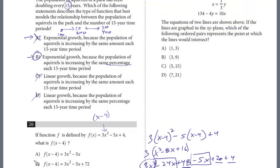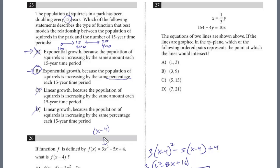All right, let's take a look at question number 27. The equations of two lines are shown above. If the lines are graphed in the xy plane, which of the following ordered pairs represents the point at which the lines would intersect? So we've seen these before. This is a system of equations. We've got two equations here, and we can just use substitution. And this lends itself to substitution, because we have x equals 1 third y, so I'm just going to plug in 1 third y for this x, and then we're only dealing with y. So we have 154 minus 4y, 10 times 1 third y. I just substituted this for x. And so that's going to be 10 thirds y.